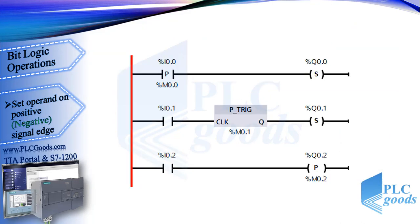Now I'm going to have a short review of the instructions covered in this video. In each line of this program, an instruction is used which is sensitive to the positive edge signal. The first instruction is sensitive to 0 to 1 changing in the I 0.0 address, so when the value of this address changes from 0 to 1, this instruction generates a pulse at its output.